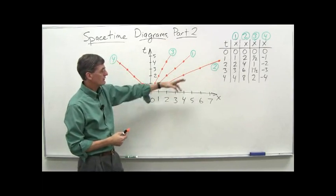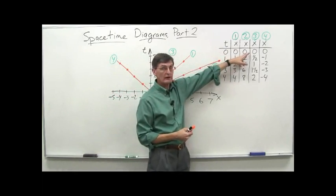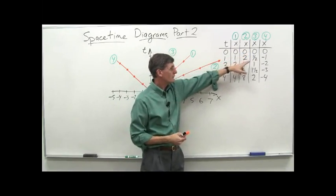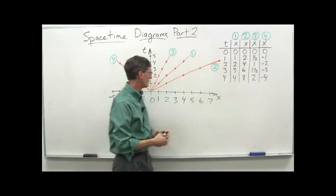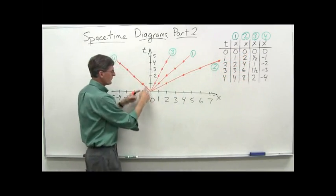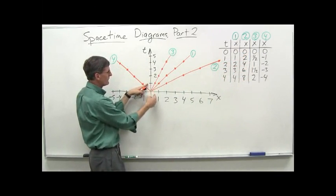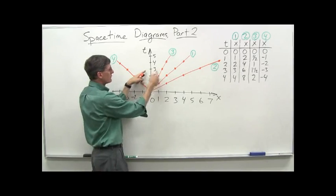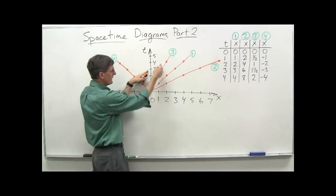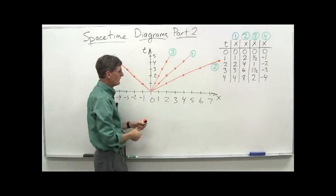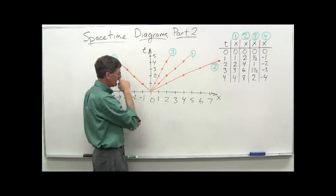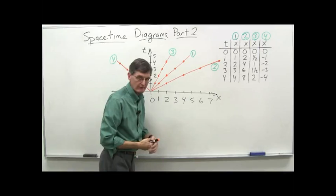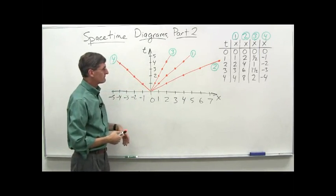Run number three: at t equals zero, starting at x equals zero. Then t equals one, one-half; t equals two, one; t equals three, one and a half; t equals four, two. We assume we have clocks at every single point we need.